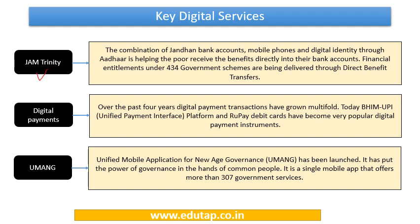The JAM Trinity — Jan Dhan, Aadhar, and Mobile — has helped the poor receive government benefits directly into their bank accounts, enabling entitlements under government schemes to be delivered through direct benefit transfers. Digital payment transactions have grown manifold over the past four years, with BHIM, UPI platform, and RuPay debit cards becoming very popular instruments. UMANG, the Unified Mobile App for New Age Governance, puts the power of governance in the hands of common people, offering more than 307 government services at just a click.